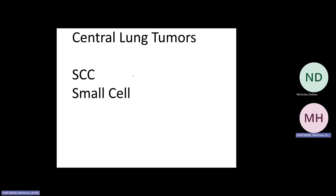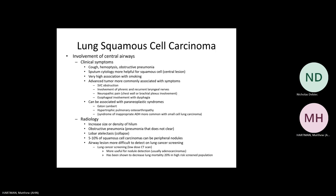We're now going to start talking about central lung tumors. That was a more peripheral adenocarcinoma, but for central lung tumors I think of squamous cell carcinoma — looking for cavitation — and then small cell. For squamous cell carcinomas, they often cavitate, have a very high correlation with smoking, and we look for a central mass with cavitation.